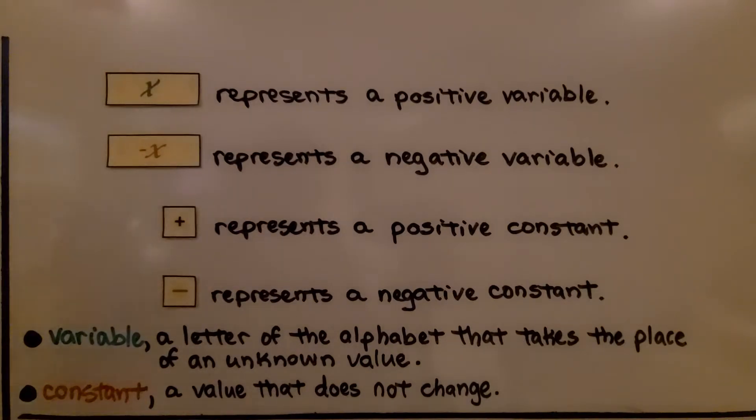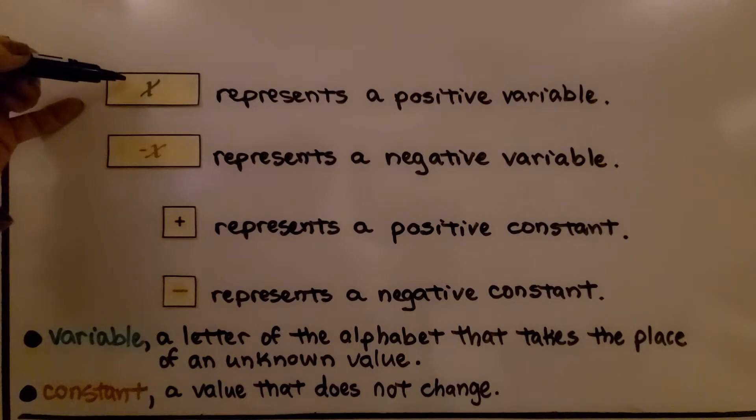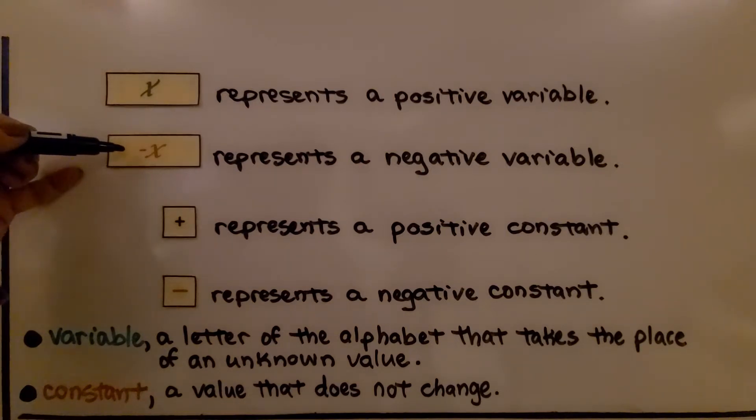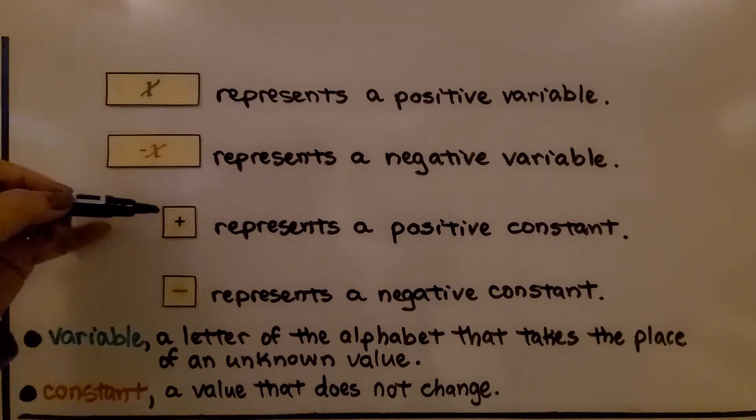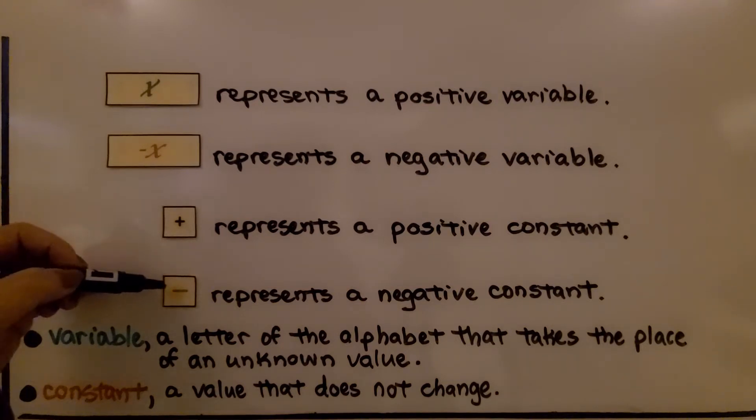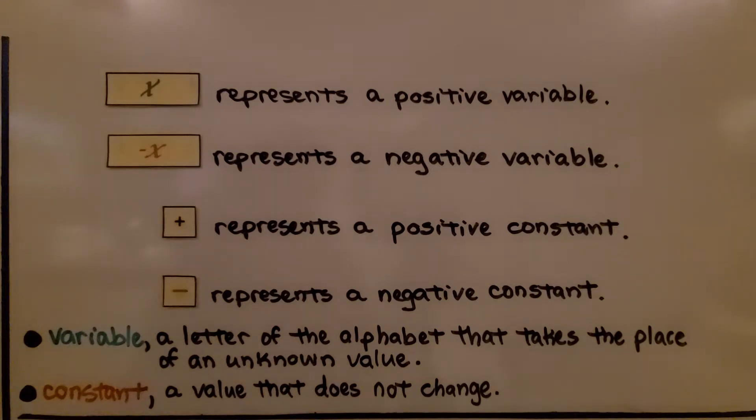For our algebra tiles, this big rectangle represents a positive variable, and this one represents a negative variable. The little square plus represents a positive constant, and the little square minus represents a negative constant. Remember, a variable is a letter of the alphabet that takes the place of an unknown value, and a constant is a value that does not change.